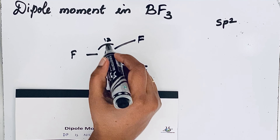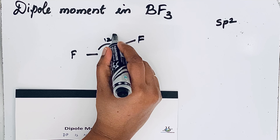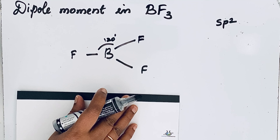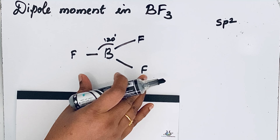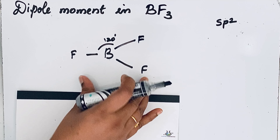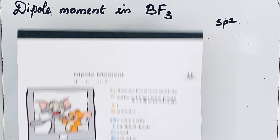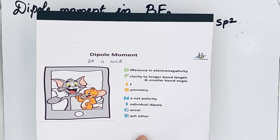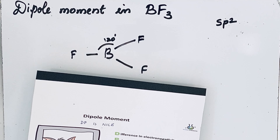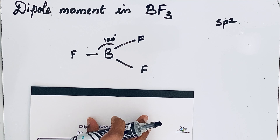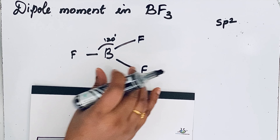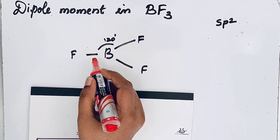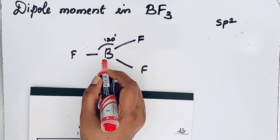The bond angle is 120 degrees, so this is a symmetry molecule. Using this mnemonic, we can say that since there is symmetry, the net dipole moment is zero in the BF3 molecule. Let us see the explanation.